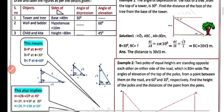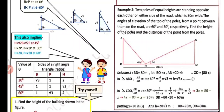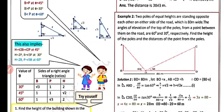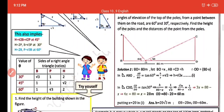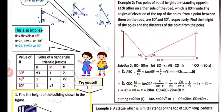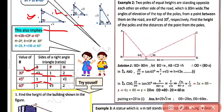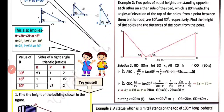We have a table showing the values for different angles of theta. For 30°, the base is √3, perpendicular is 1, and hypotenuse is 2. For 45°, base and perpendicular are both 1 unit and hypotenuse is √2. For 60°, base is 1, perpendicular is √3, and hypotenuse is 2.